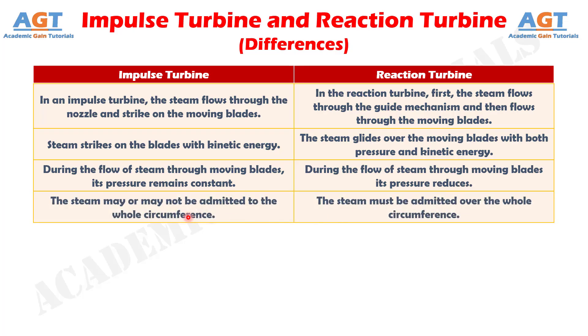Number 4: In impulse turbine, the steam may or may not be admitted to the whole circumference. Whereas, in reaction turbine, the steam must be admitted to the whole circumference.